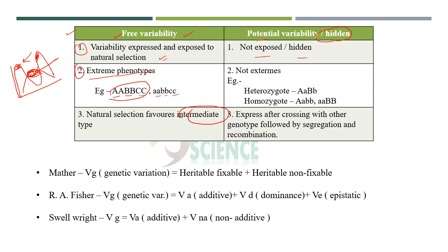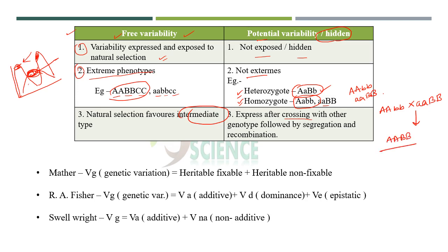As for potential variability, there is potential but the genotypes are not extremes. For example, the heterozygote AaBb — because of homozygosity we have AABB and aabb. This type of variability can be utilized or expressed only after crossing with each other, following segregation. For example, if we cross AaBb, in subsequent generations following segregation and recombination we can find extreme genotypes and have that variability expressed.